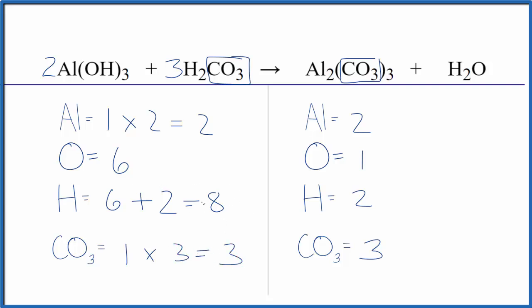But I'll need to update the hydrogens here because those changed. So I have three times one times two. I have six plus two times three is six. That gives us twelve. And since we're counting the carbonate as one thing, we don't need to worry about the oxygens right now.